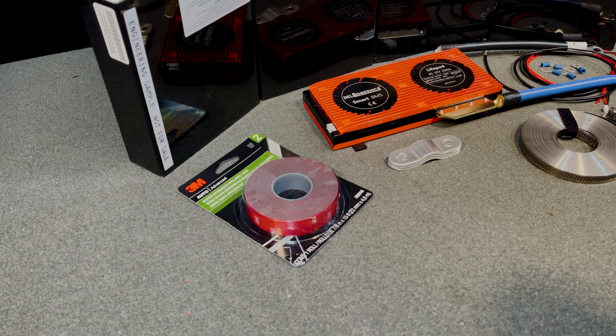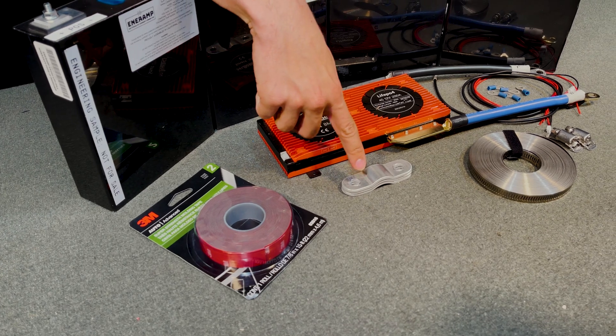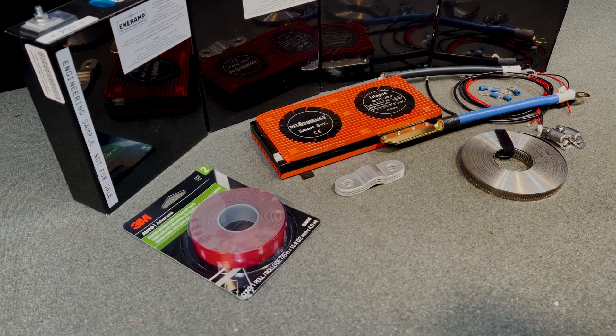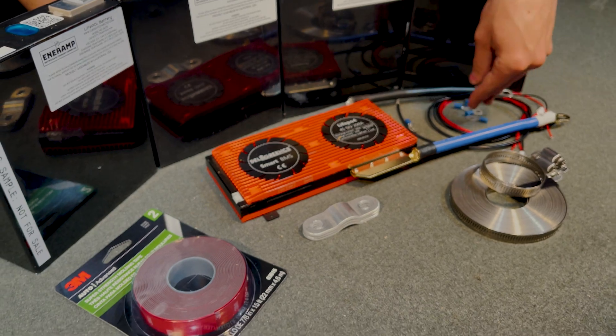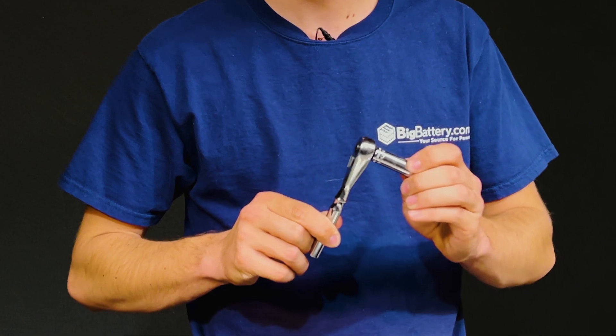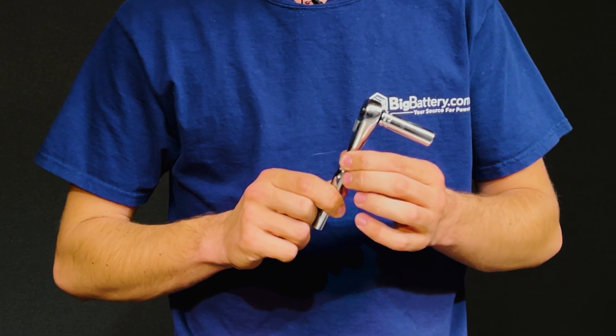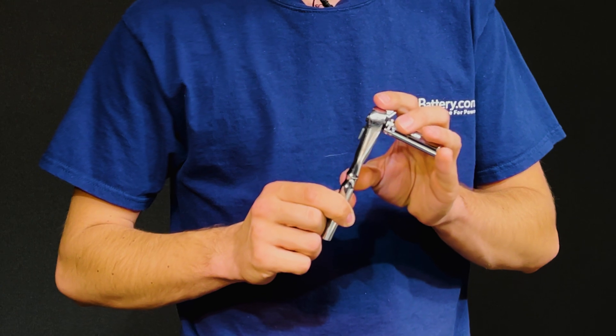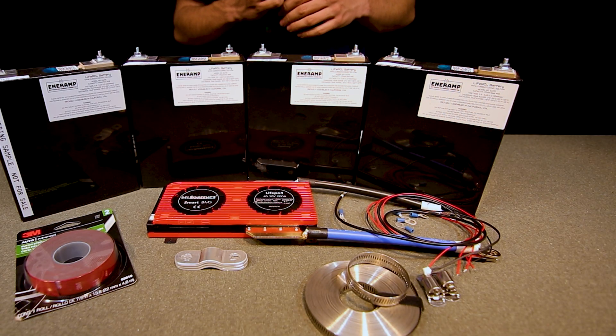We have some 3M VHB tape, the BMS, bus bars to interconnect the battery, miscellaneous ring terminals, and the leads that came with the battery management system. For tools, we have a 10 millimeter deep well socket and quarter inch drive ratchet. If you can get a set that are insulated that's even better. We have wire strippers for the small gauge balance leads and a crimping tool to put the terminals on the balance leads.